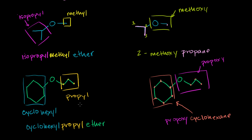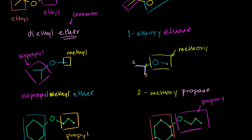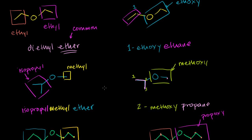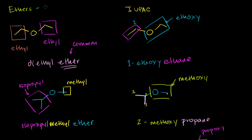Now that we've named a few ethers, let's think about their properties. We've already used diethyl ether several times — especially in SN2 reactions and places where we didn't want protons floating around. In general, ethers make good solvents because they tend to be fairly unreactive. They are especially useful as aprotic solvents, meaning they don't have hydrogens directly bonded to an electronegative oxygen that could lose a proton and react with other things.